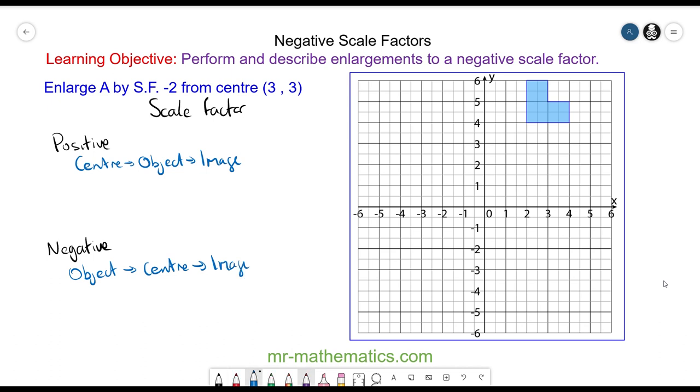So I'll take you through this using this example of a scale factor of negative 2 and centre 3, 3. So our centre is that coordinate 3, 3.